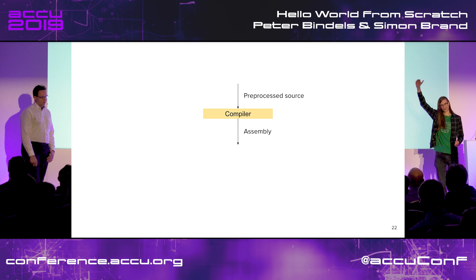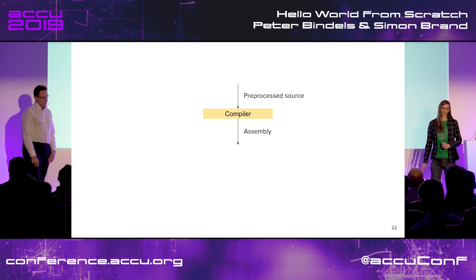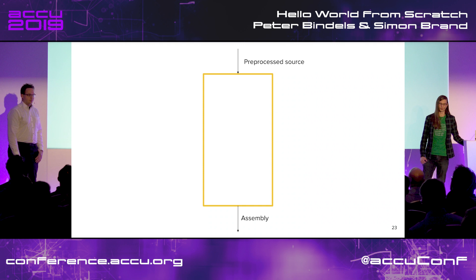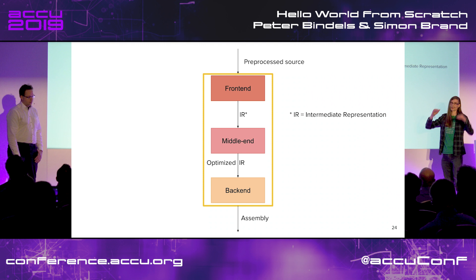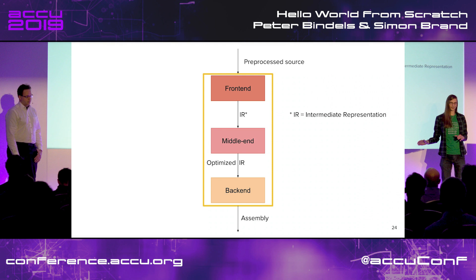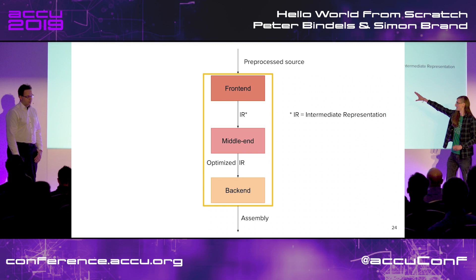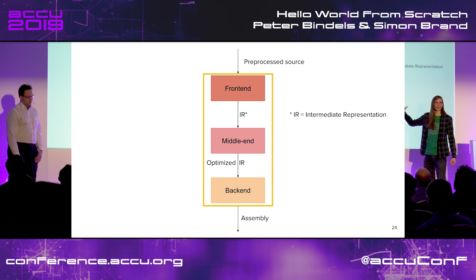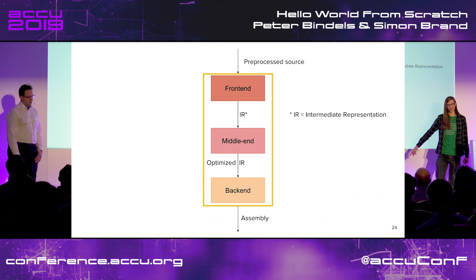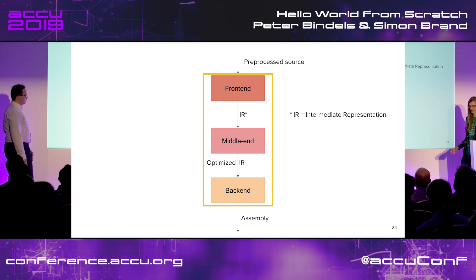Now we're going to get on to the compiler, which is hard, complex, and could fill many talks. We want to give you a good overview of how compilers work and what kinds of transformations they do. The compiler takes our preprocessed source and outputs assembly. We can expand it out and split it into a front end, a middle end, and a back end. The front end takes our source and outputs an intermediate representation — usually called IR. The middle end optimizes and analyzes it, and the back end outputs assembly.